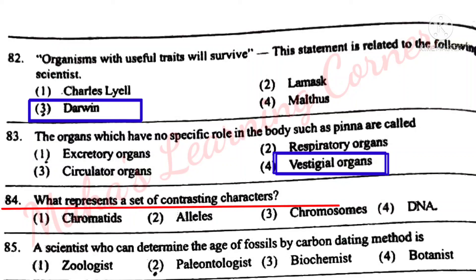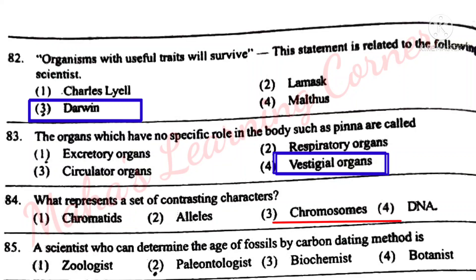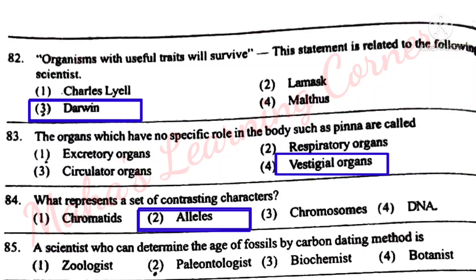What represents a set of contrasting characters? Options: Chromatids, Alleles, Chromosomes, DNA. Correct answer: Option 2 – Alleles.